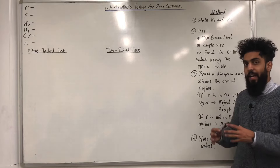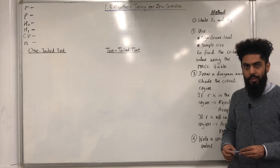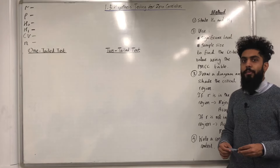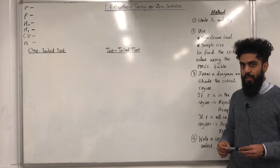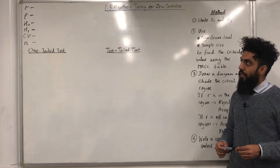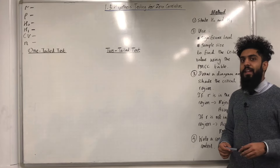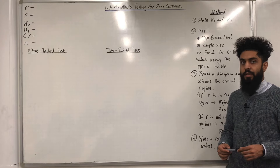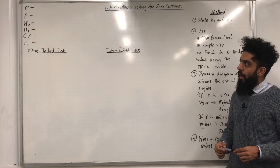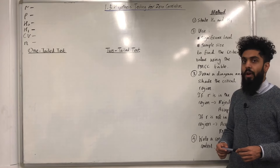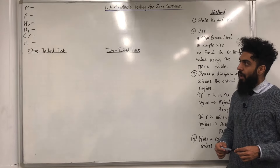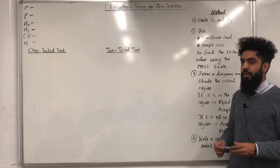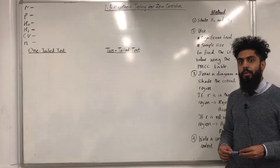I'm going to start off this teaching video by explaining some important notation. Firstly, you've got R, which represents the sample product moment correlation coefficient. Then you've got ρ — that is a Greek letter called rho. Rho represents the population product moment correlation coefficient. Then you've got H0, which is the null hypothesis, and H1, the alternative hypothesis. CV is a shorthand for critical value, and N represents the sample size.